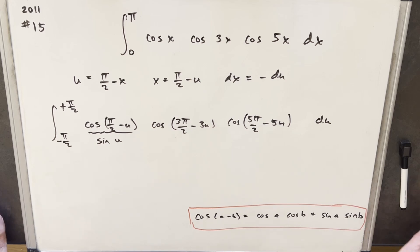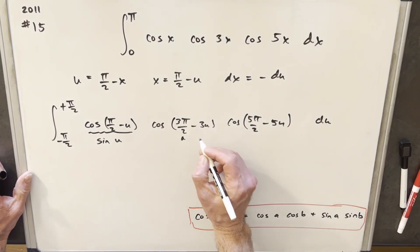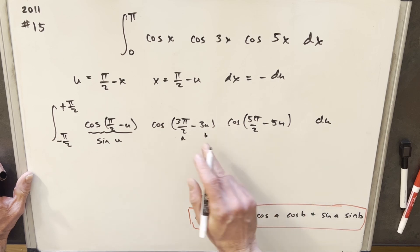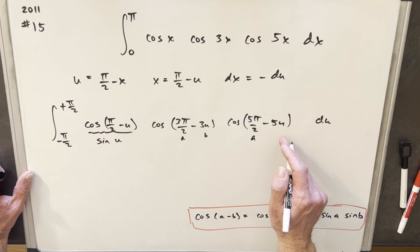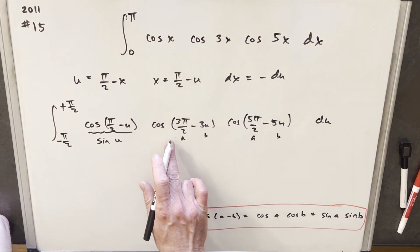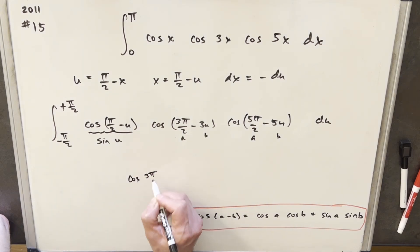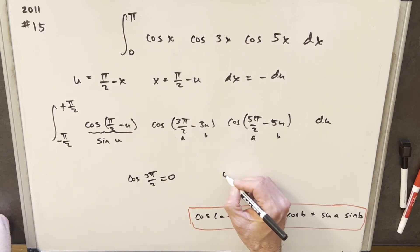And when I said there's a shortcut, what I want to notice is just imagine if we're plugging in, so our a value, like here, our a value is 3 pi over 2, and this is our b value, not with the minus sign, just the 3u. And then here, it's going to be 5 pi over 2, and 5u would be our b. The thing I want to notice, though, when we do this, for our cosine of a value, so cosine of 3 pi over 2, this is equal to 0. And the same thing here, cosine of 5 pi over 2 is also equal to 0.